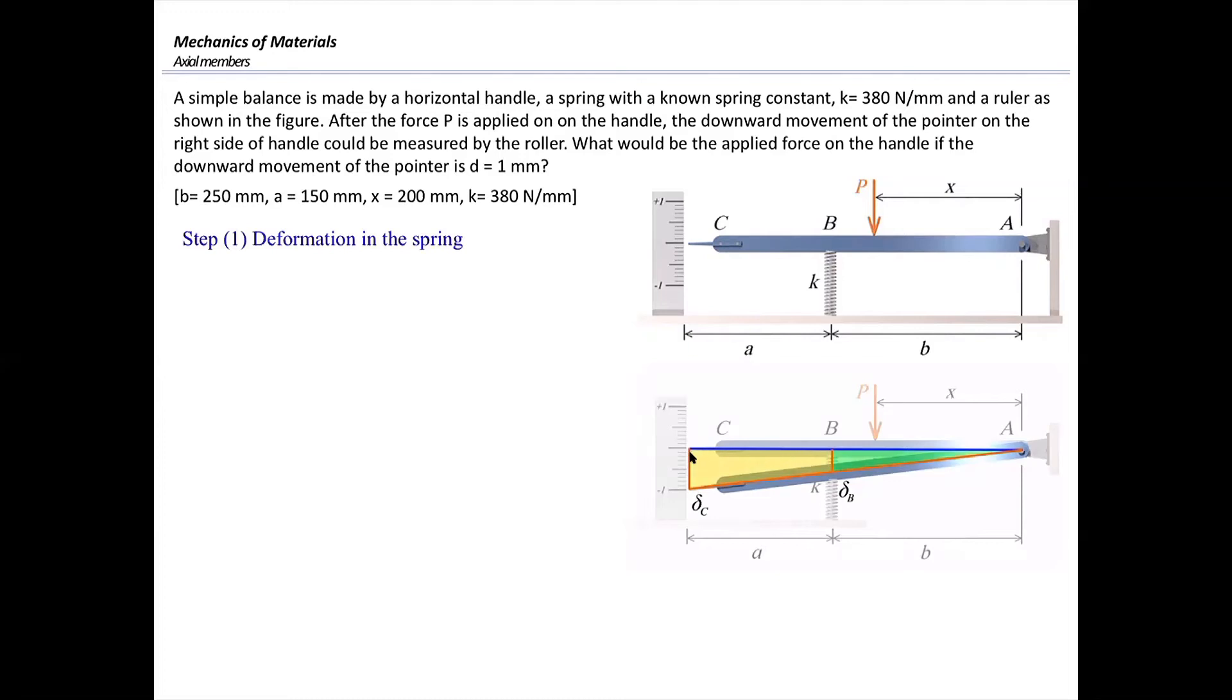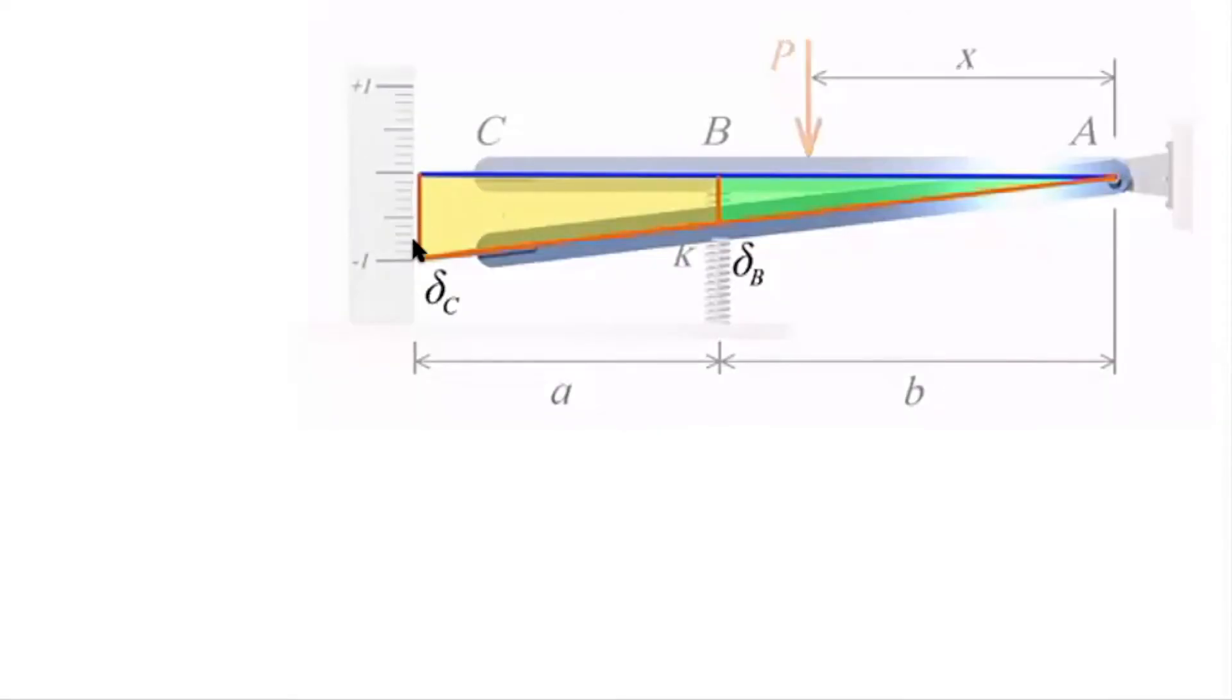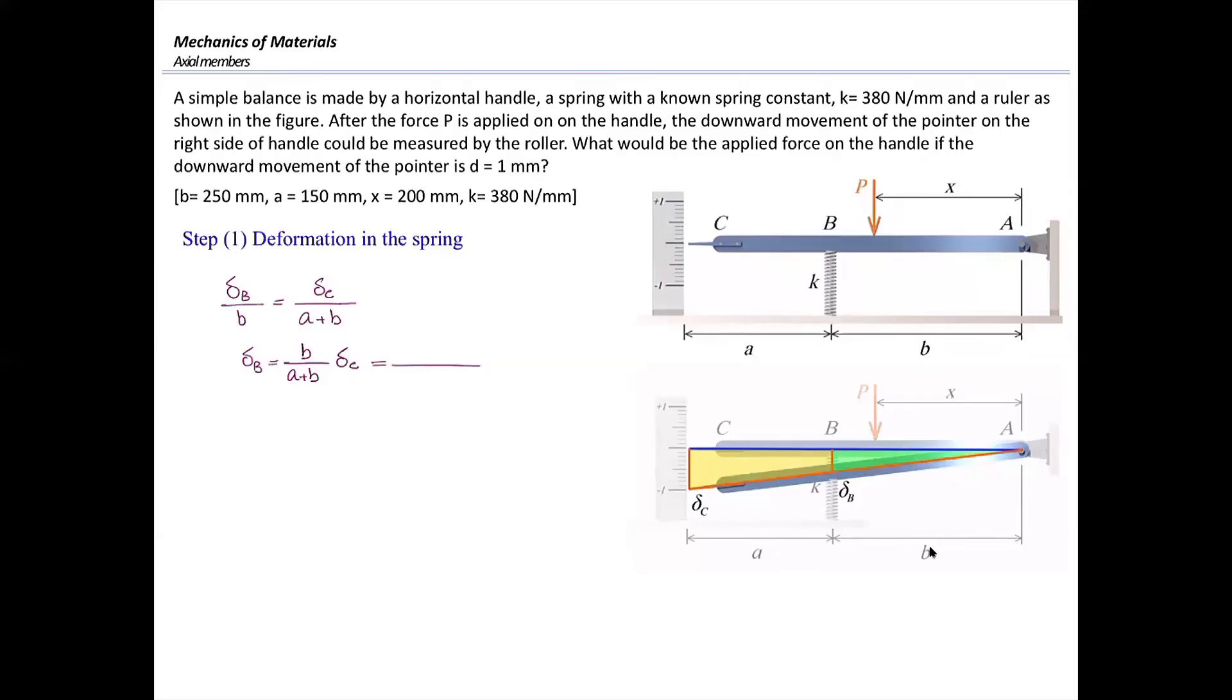We can relate that to the deformation in spring using these two triangles. The deformation at C, delta C, divided by the length of that triangle, A plus B, is equal to the deformation of spring, delta B, divided by the length of that green triangle, B. So, joint C has moved downward by one millimeter. Plugging in A and B, we can identify that spring is being compressed by 0.625 millimeter.